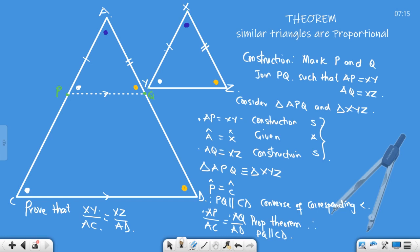Therefore, what is my AP? My AP is XY. So XY over AC is equal to—what is my AQ? Remember, my AQ is XZ over AD, and we are done with the proof.